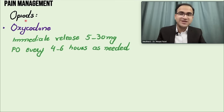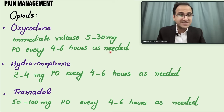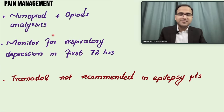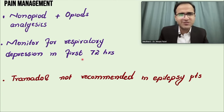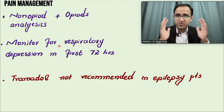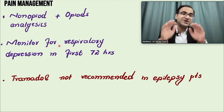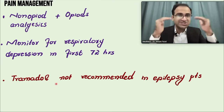For opiates: oxycodone immediate release 5 to 30 mg orally every 4 to 6 hours as needed; hydromorphone 2 to 4 mg orally every 4 to 6 hours; tramadol 50 to 100 mg orally every 4 to 6 hours. Combining non-opiate analgesics (NSAIDs) with opiates reduces the opiate dose required. Always monitor for respiratory depression in the first 72 hours. Opiates also cause hypotension and constipation. Tramadol is not recommended in epilepsy patients as it lowers the seizure threshold.